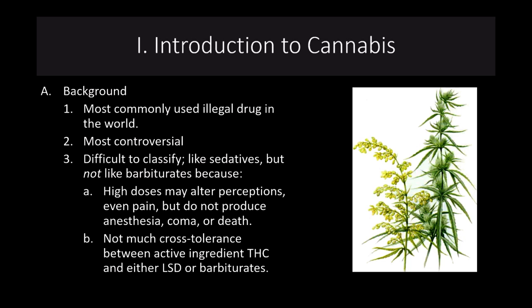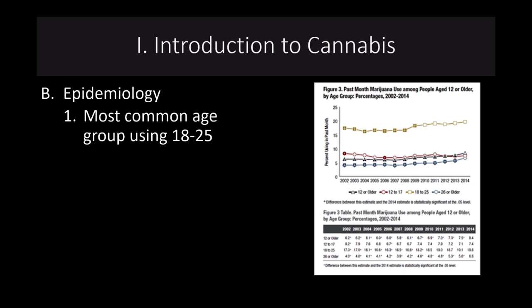It is a very different type of drug. We'll talk about how endogenous cannabinoids act very differently than any other neurotransmitter or brain substance. In terms of the epidemiology of cannabis use, it's been relatively stable over the last 20 years. The most common age group using is 18 to 25. Those 26 and older are increasing their use rates as people find it useful for anxiety or sleep, and as there's more knowledge about different strains.